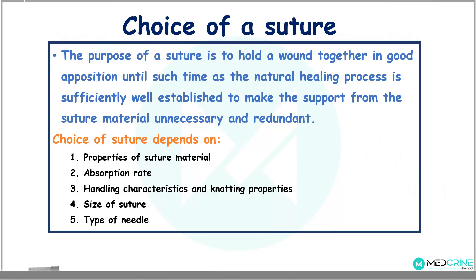What affects the choice of a suture? The purpose of a suture is to hold the wound together in good apposition until such a time as the natural healing process is sufficiently well established to make the support from the suture material unnecessary and redundant. Therefore, the choice of suture material depends on the properties of the suture material itself, absorption rate, handling characteristics, knotting properties, size of the suture material, and the type of needle to be used.